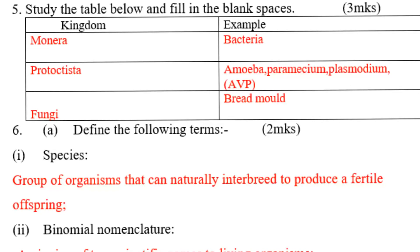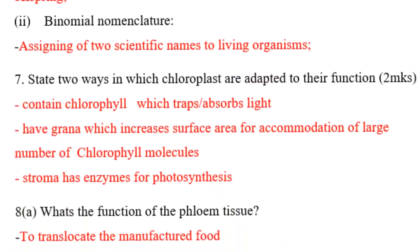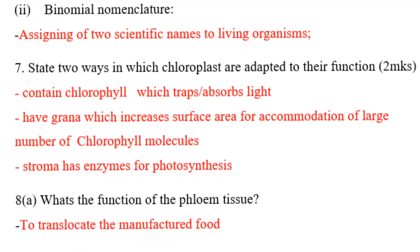Define the following terms. Species: a group of organisms that can naturally interbreed to produce fertile offspring. Binomial nomenclature: the assigning of two scientific names to a living organism.